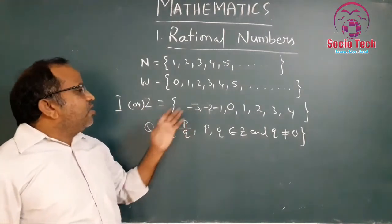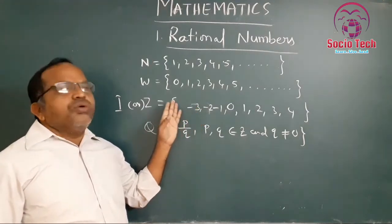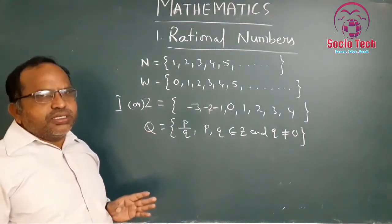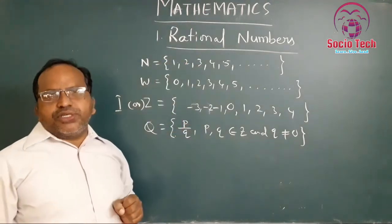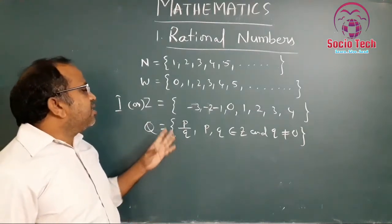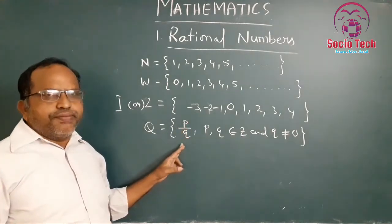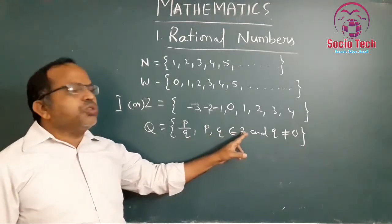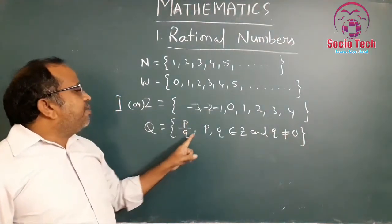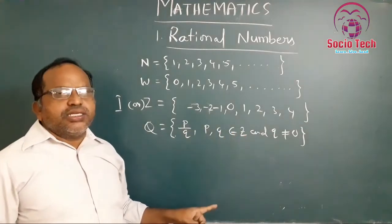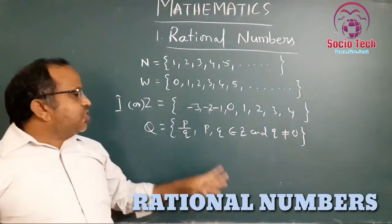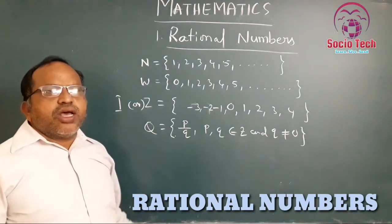Now, rational numbers — this is our main concept today. Rational numbers are the numbers which are expressed in the form p by q, where p and q belong to Z (integers), and q is not equal to 0. That means both the numerator and denominator belong to integers, and the denominator must not be equal to 0. Such numbers are called rational numbers, and the set of rational numbers is denoted by Q.